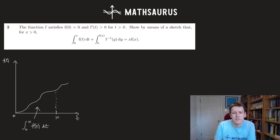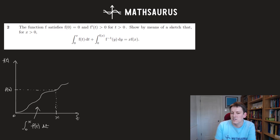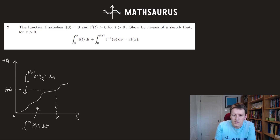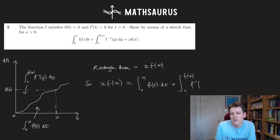And the second integral, from 0 to f(x) of f⁻¹(y) dy — f(x) is up on the y-axis. This is also a reasonably easy area to put on the graph: I'm doing a y-integral, looking at the inverse function. So this area here is the integral from 0 to x of f(t) dt, plus the integral from 0 to f(x) of f⁻¹(y) dy. Together they fill the rectangle, which has area x times f(x), and that's exactly what we wanted to show.